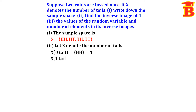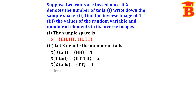For 1 tail, the outcomes are HT and TH — two possibilities, so the count equals 2. For 2 tails, there is only one possibility: TT, so the count equals 1. Thus the random variable X takes the values 0, 1, 2.